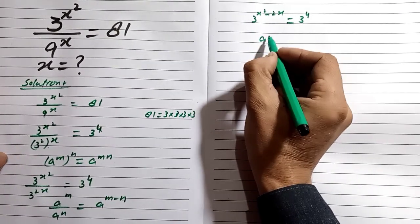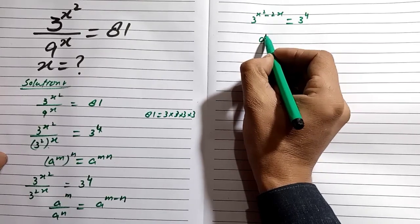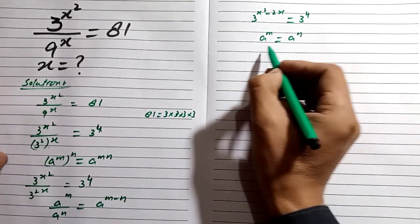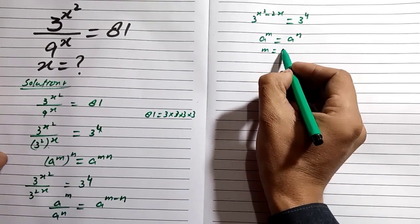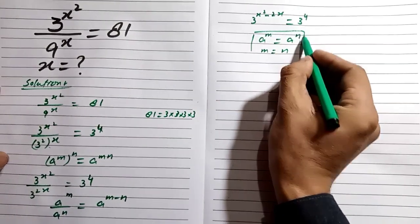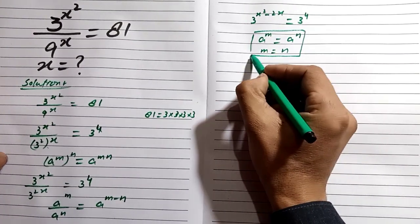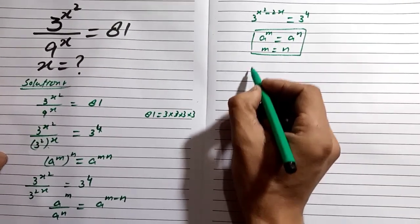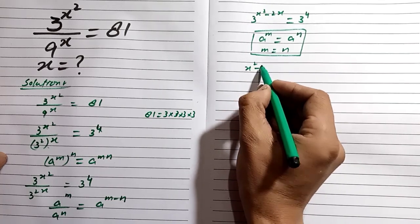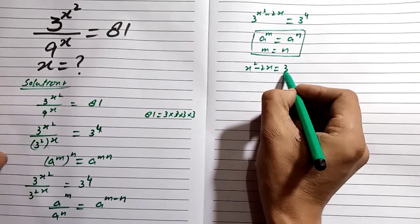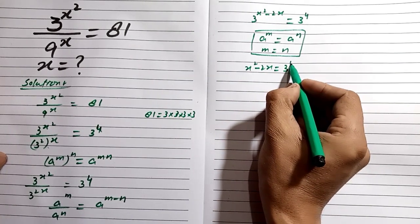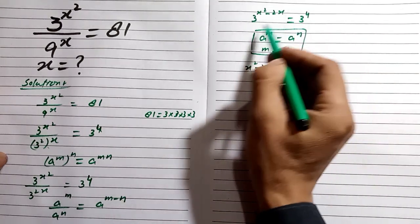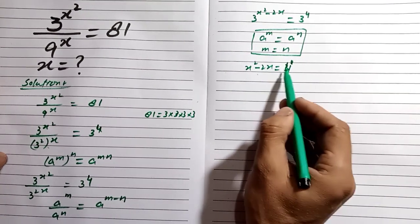Since the base is the same, we can use the exponent rule: if a^m equals a^n, then m equals n. Applying this rule to our equation, we get x² minus 2x which is equal to 4.